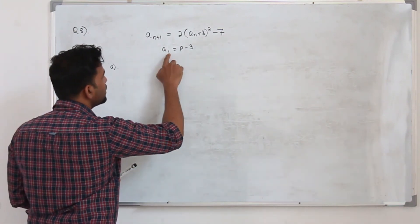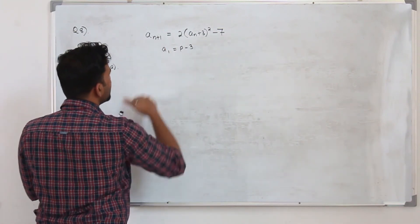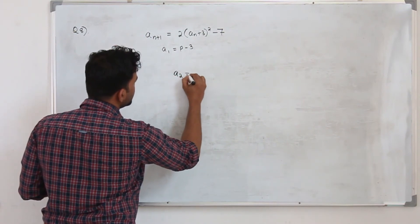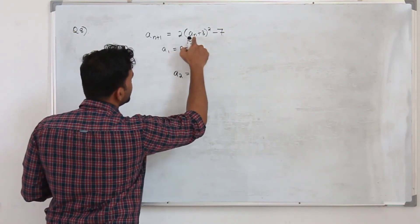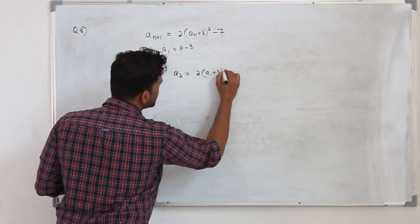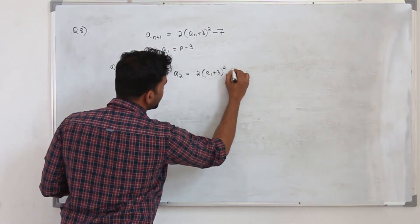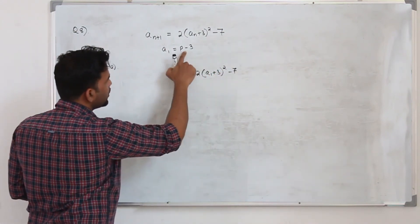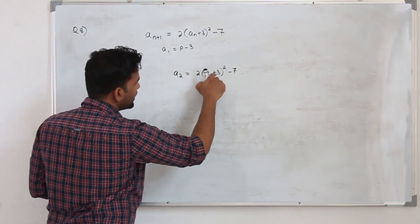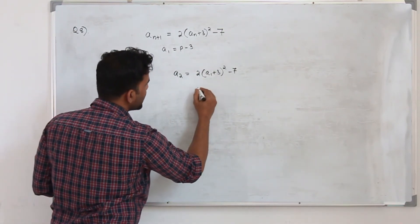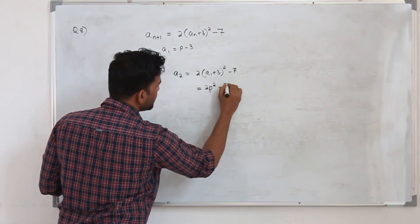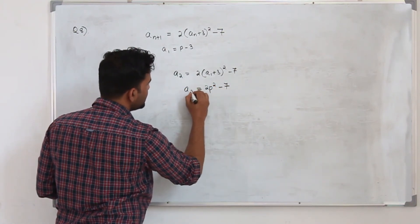We have a₁ = p − 3. Substituting n = 1 into the recurrence: a₂ = 2(a₁ + 3)² − 7. Replace a₁ with p − 3: a₂ = 2(p − 3 + 3)² − 7 = 2(p)² − 7 = 2p² − 7. The −3 and +3 cancel, leaving a₂ = 2p² − 7.